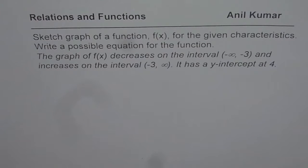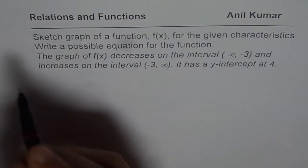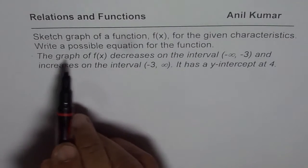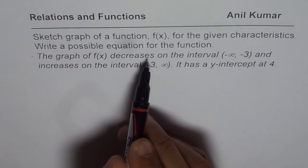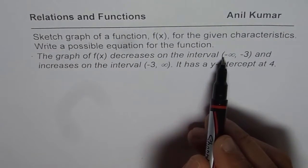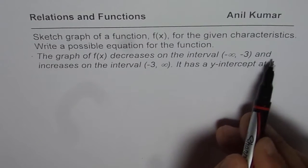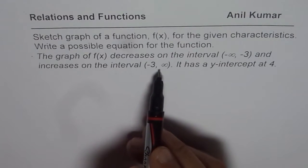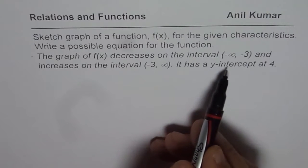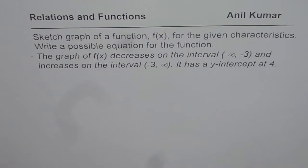The question here is sketch graph of a function f(x) for the given characteristics and write a possible equation for the function. The characteristics given are: the graph of f(x) decreases on the interval (-∞, -3) and increases on the interval (-3, ∞). It has a y-intercept at 4. You can pause the video, answer the question, and then look into my suggestion.